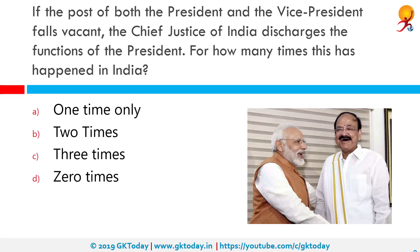If the post of both president and vice president of India falls vacant, the Chief Justice of India discharges the functions of the president. For how many times has this happened in India? The correct answer is only once. M. Hidayatullah was the only Chief Justice to act as president, and he did so in 1969.